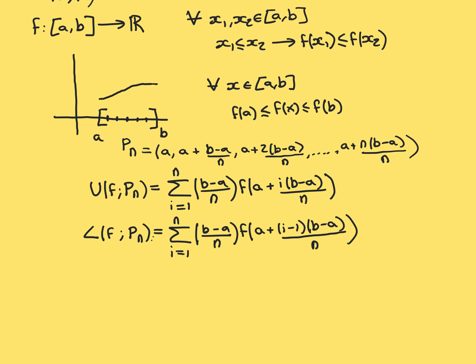And then if you go all the way up to i equal to N, you still have the length of the subinterval, and then you have f evaluated at a plus (N−1)(b−a)/N — that is, f evaluated at the penultimate point, the penultimate cut in the partition before the final upper bound b. And that will indeed be the infimum of the function over that final subinterval.